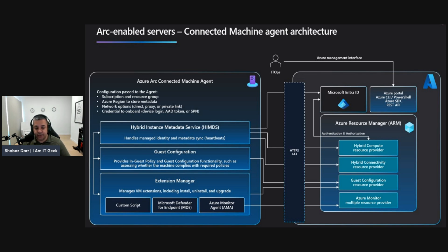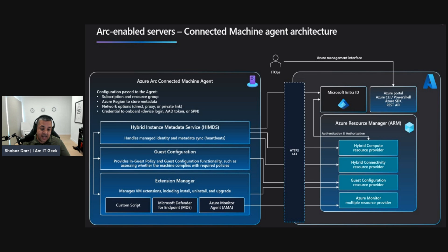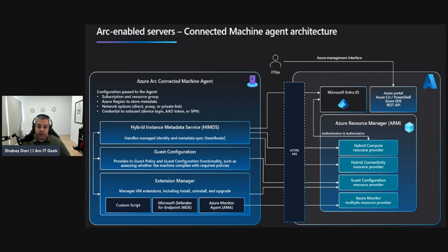There is some important behavior to know when it comes to Azure Policy machine configuration for disconnected machines. Azure Policy assignments that target these machines are unaffected — a guest assignment is stored locally for 14 days. Within the 14-day period, if the connected machine agent can reconnect to the service, the policy assignment is reapplied. Assignments are deleted after 14 days and are not reassigned to the machine after that period. The extension agent manages VM extensions, including install, uninstall, and upgrade.